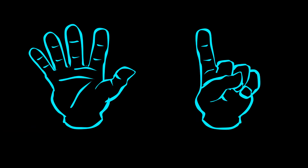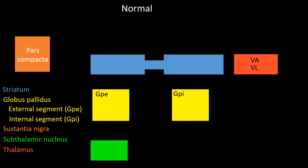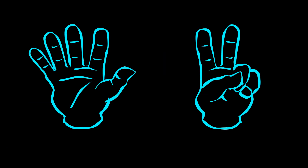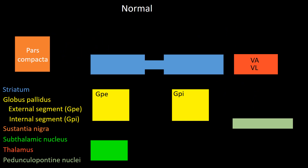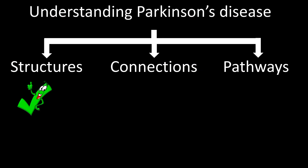The sixth structure is the pedunculopontine nuclei, or pedunculopontine tegmentum nucleus, added to the basic figure as a light green rectangle. The seventh structure is the cerebral cortex, involved with movement mainly in the frontal cortex. So we have introduced all the structures; now we will talk about connections.